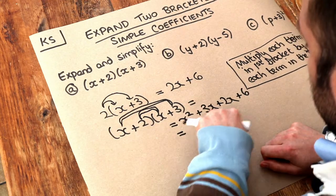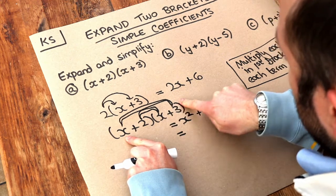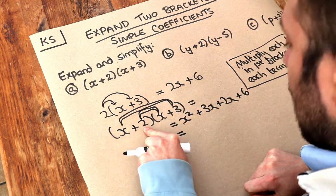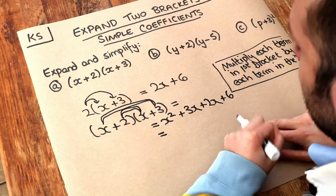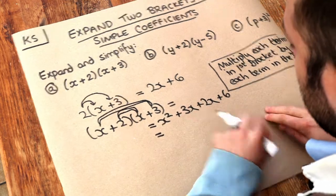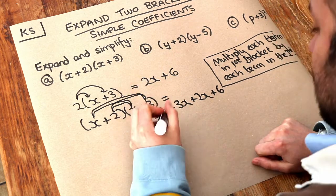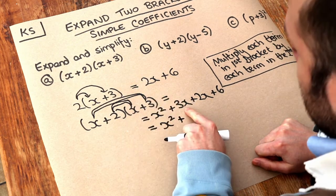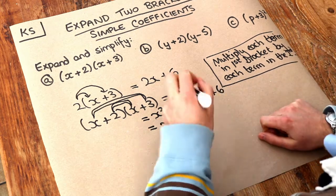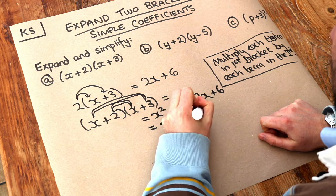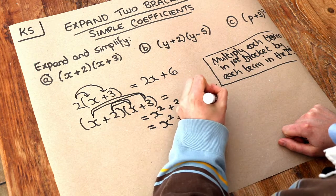The order doesn't really matter in terms of these four terms, but I tend to do the first thing in the first bracket multiplied by each thing in the second bracket, then the second thing in the first bracket multiplied by each thing in the second bracket. That way you won't accidentally miss any terms. Now we collect like terms: x squared stays as x squared. 3x plus 2x gives 5x, because 3 lots of x plus 2 lots of x is 5 lots of x. And the constant term is just 6.